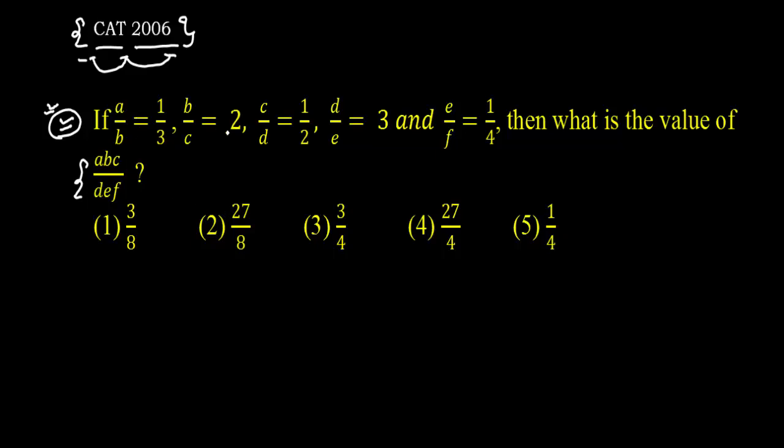We have A, B, C, D, E and F - six values are given. So we can directly say, to solve this question, we have to take A, B, C, D, E and F. We have to take few values and find the ratio.